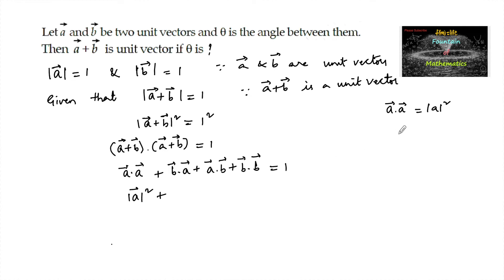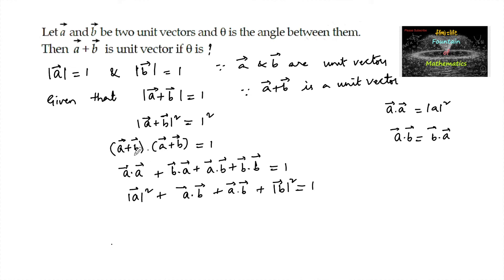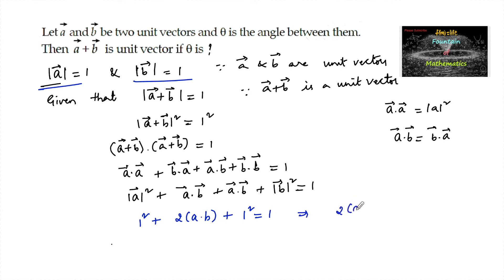Since dot product is commutative, a dot b and b dot a are both equal, so b dot a can also be written as a dot b. Therefore we have mod a squared plus 2 times a dot b plus mod b squared equals 1. Since mod a equals 1 and mod b equals 1, we get 1 plus 2 times a dot b plus 1 equals 1, which implies 2 times a dot b equals negative 1, so a dot b equals negative 1 by 2.